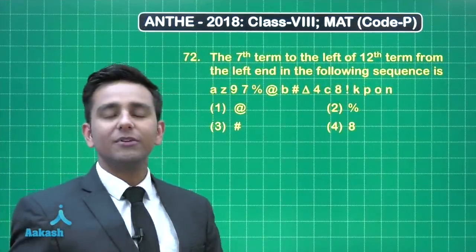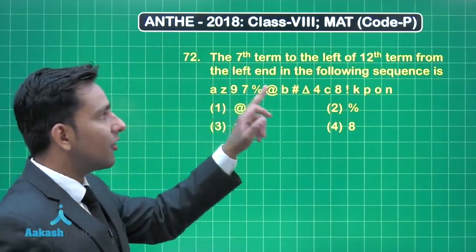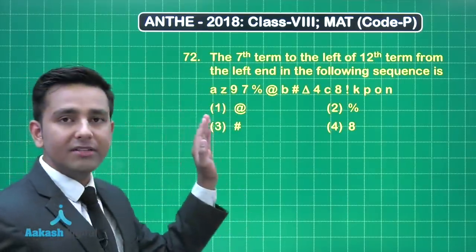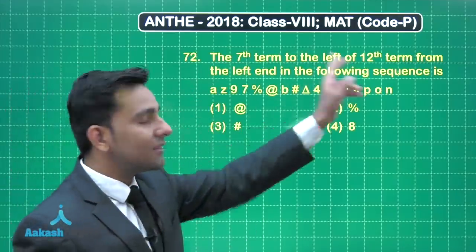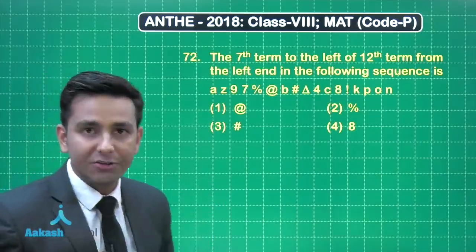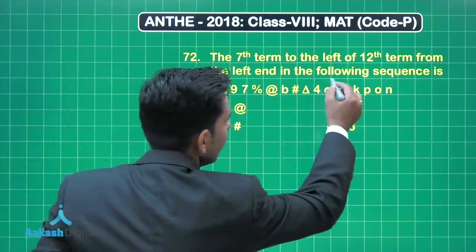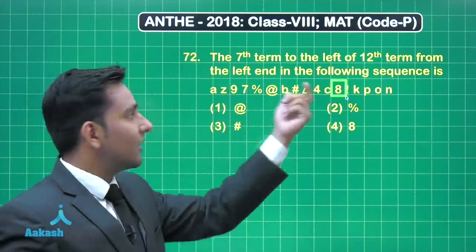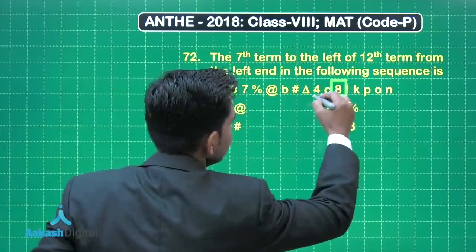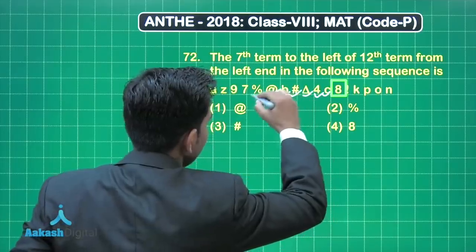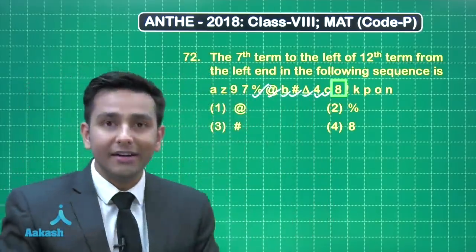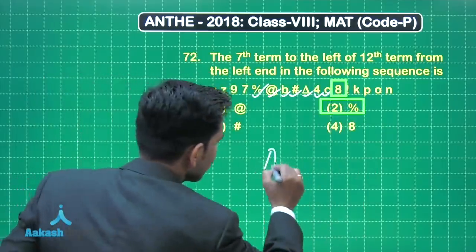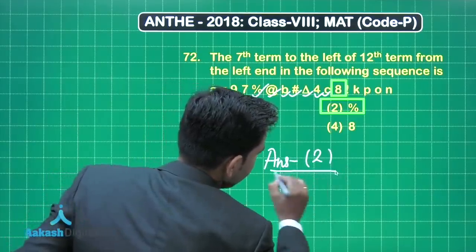Now let's discuss question number 72. This question states: the seventh term to the left of the twelfth term from the left end in the following sequence is? Here we have an alphanumeric sequence. First, find the twelfth term from the left end of the given arrangement — that is the number 8. Now count seven terms to the left of this number 8: first, second, third, fourth, fifth, sixth, seventh. So the percentage sign is the correct answer — option number 2.